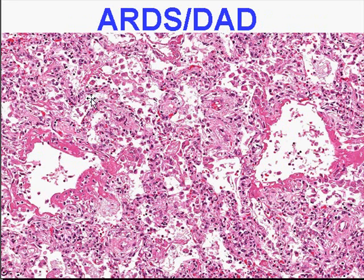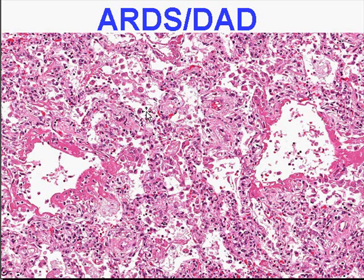Here's diffuse alveolar damage. It looks like pulmonary edema with cells and protein, and these are damaged alveolar walls. You can see the pink stuff here is fibrin. We have cells and protein inside the alveoli — the classic picture for ARDS, adult respiratory distress syndrome, or acute respiratory distress syndrome. The more common pathologic name is diffuse alveolar damage, because that's what it is.